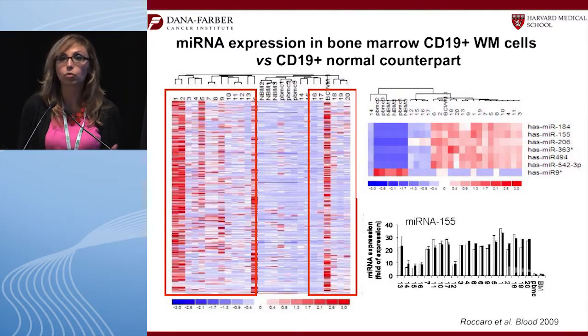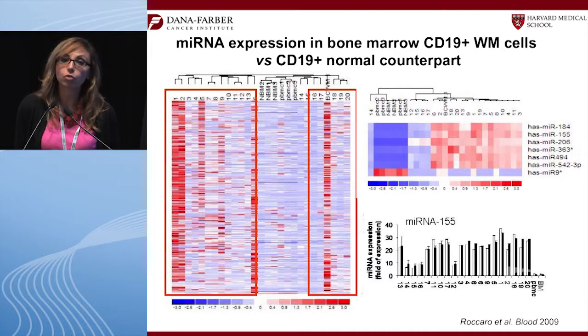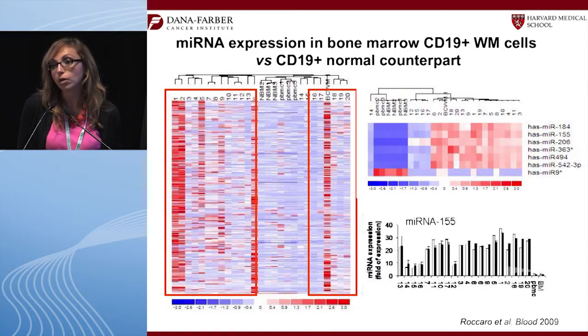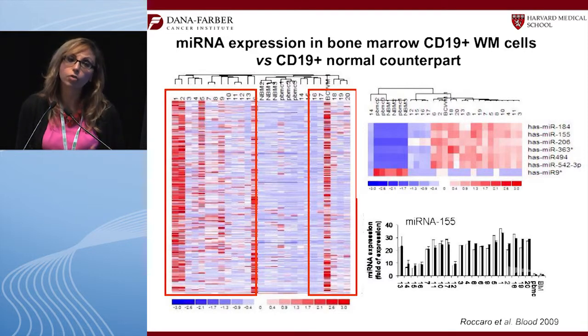We know that genetics do not explain everything — identical twins with the same genetics may have very different diseases — so we started looking at epigenetics and non-coding RNAs including microRNAs. By microRNA expression profiling, we found that microRNA-155, an oncomiR, is very highly elevated in Waldenström cells. This is also present in CLL, where the Mayo Clinic group has shown it can be used as a prognostic marker in peripheral blood — and we've shown very similar results in Waldenström.